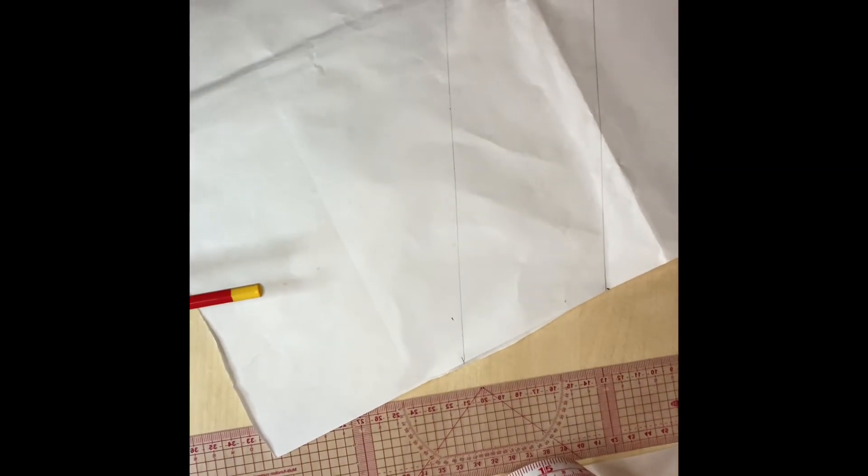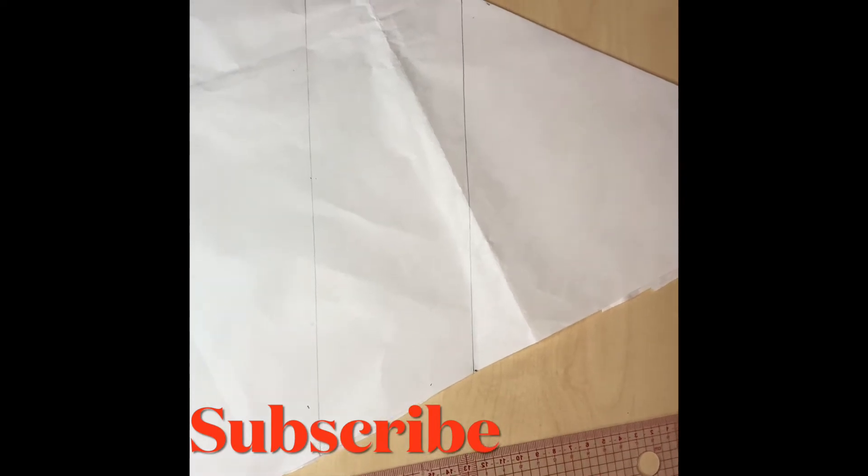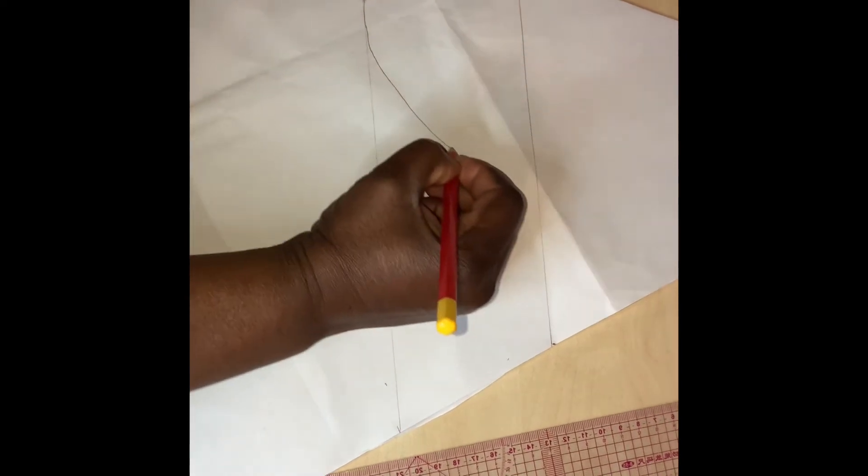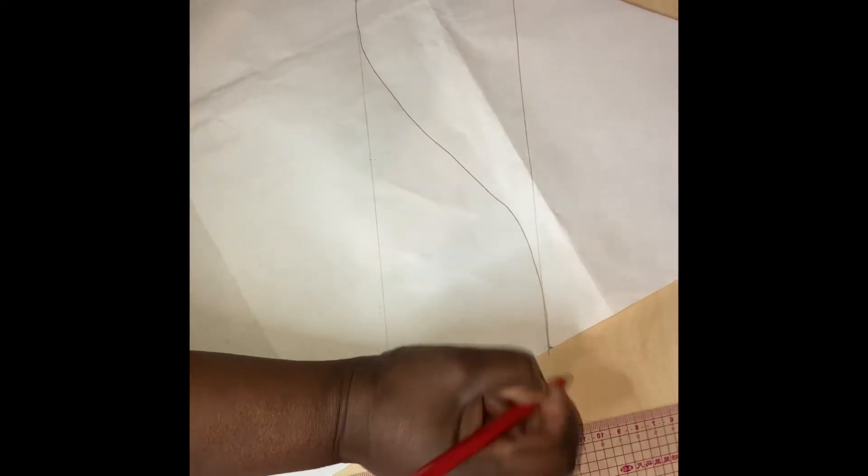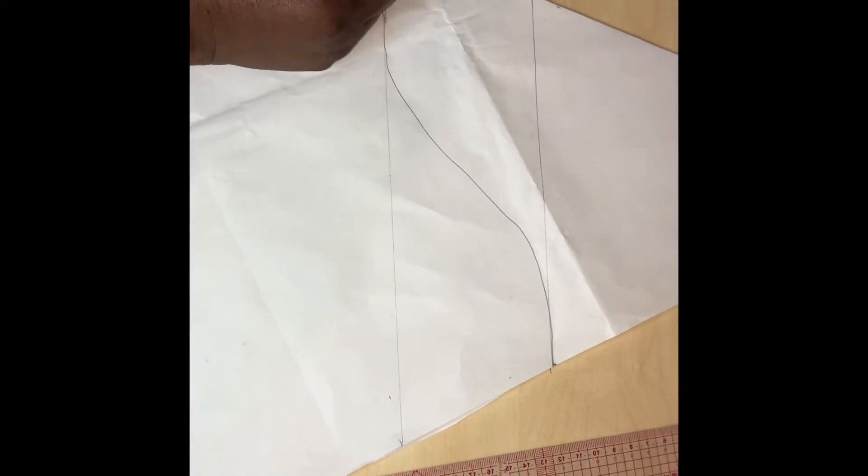The next thing right now is to shape out our ham. You are going to draw a curve like this. Start from this head, bring it this way, connect it this way. This will stand for our ham.